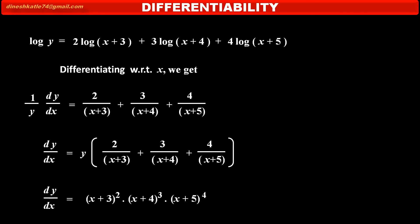(x+3)² · (x+4)³ · (x+5)⁴ times [2/(x+3) + 3/(x+4) + 4/(x+5)]. So, this is the derivative of the given function.